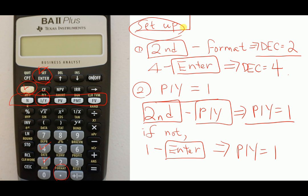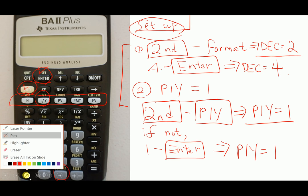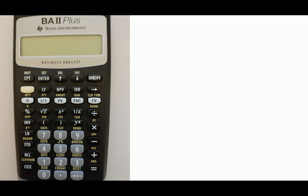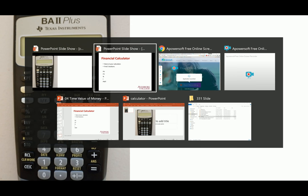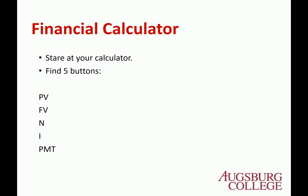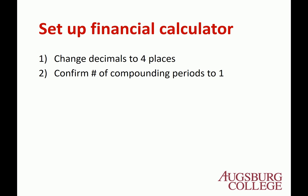So that's how to set up the calculator. You need to confirm these two things first before using the calculator: number of decimals set to 4 decimal places, and confirm the number of compounding periods per year equals 1.